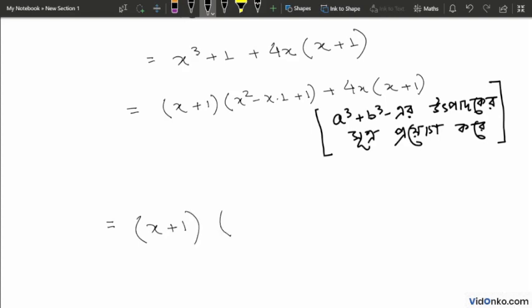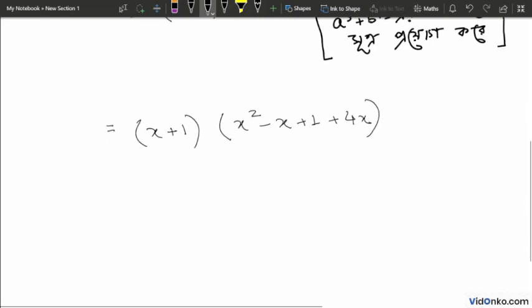Continuing: x square minus x plus one, plus 4x into x plus one gives us x square minus x plus one plus 4x. This simplifies to x square plus 3x plus one.